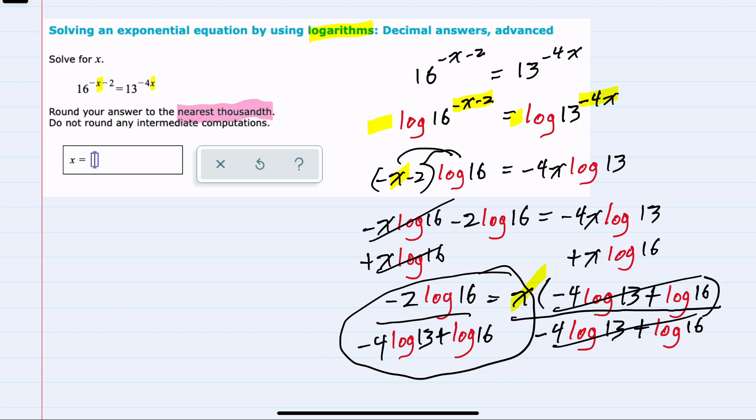And to evaluate it, rounding to the nearest thousandths with no intermediate computations, I can use a tool like Desmos to plug in everything all at once and allow Desmos to make the computation.